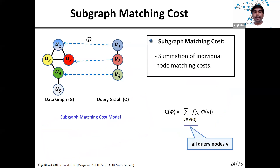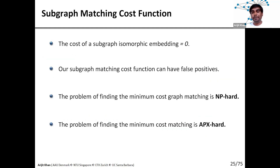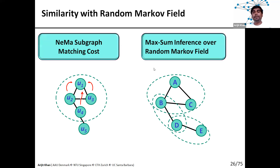We define the cost of matching the entire query graph as the cost of matching individual query nodes. We show that this problem is still NP-hard and also approximation-hard, meaning it's very unlikely we can find a polynomial-time constant-factor approximate solution. So we consider heuristics, taking ideas from the machine learning domain — in particular, we look at the problem of inference over random Markov fields.